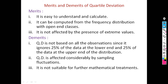Next topic is merits and demerits of quartile deviation. Merits: it is very easy to understand and easy to calculate. It can be computed for a frequency distribution with open-end classes. It is not affected by the presence of extreme values. Demerits: quartile deviation is not based on all observations, since it ignores 25% of the data at the lower end and 25% at the upper end of the distribution.